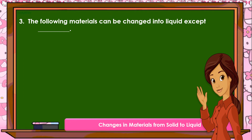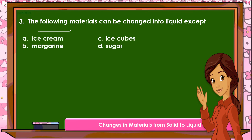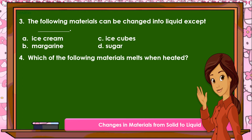Number 3: The following materials can be changed into liquid except — A. Ice cream. B. Margarine. C. Ice cubes. D. Sugar. Number 4: Which of the following materials melts when heated? A. Milk. B. Salt. C. White sugar. D. Wax.